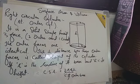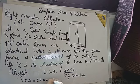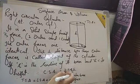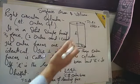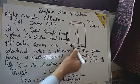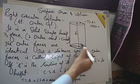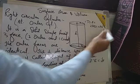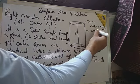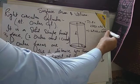Total surface area means lateral surface area plus area of the remaining faces. The lateral surface area is 2πRH. The bottom is circular, so its area is πR², and the top is also circular, so its area is again πR². The total area becomes: 2πRH plus πR² plus πR², which equals 2πRH plus 2πR².